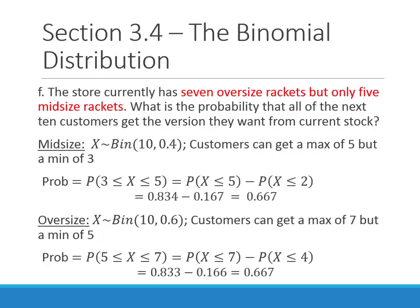A slightly alternate question is: suppose they have seven of the one racket but only five of the other — same question: what's the probability that customers get the version they want from current stock? I had a good solution sent in and wanted to quickly review that. Because I was stumbling over my words on Monday, it does in fact change the probability. The number of smaller rackets affects how many customers can want the oversized racket.